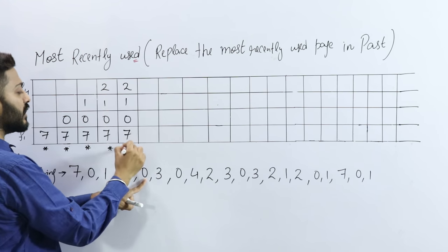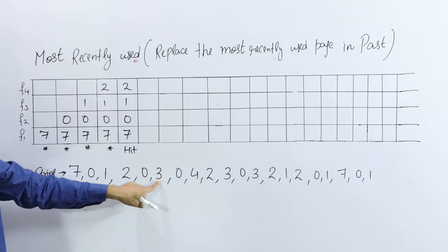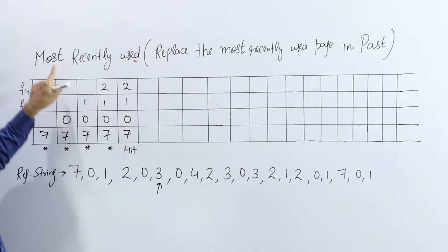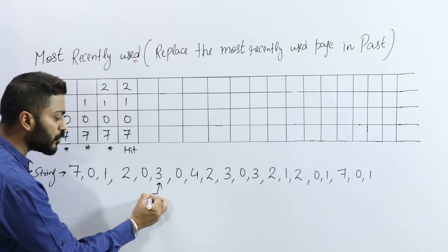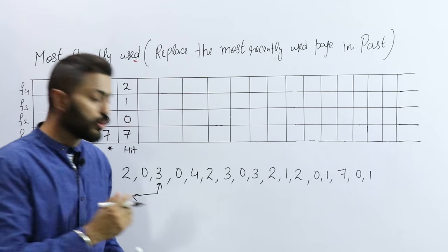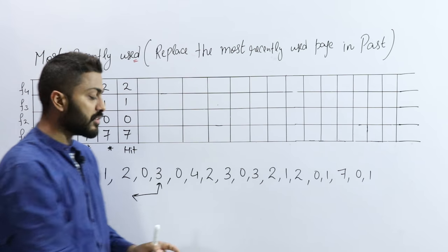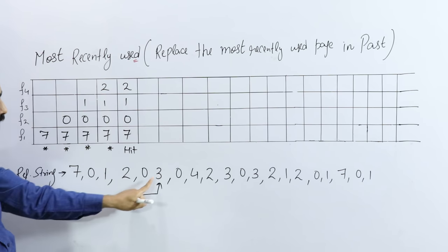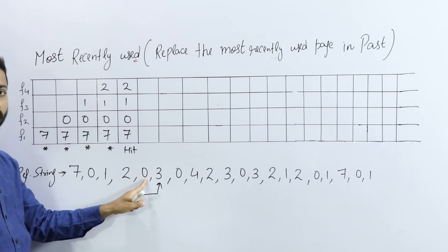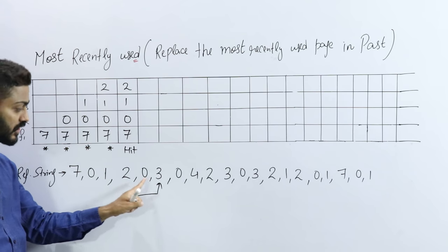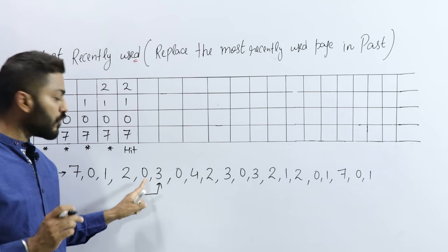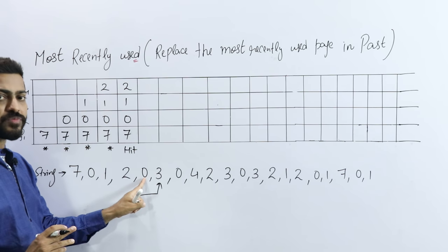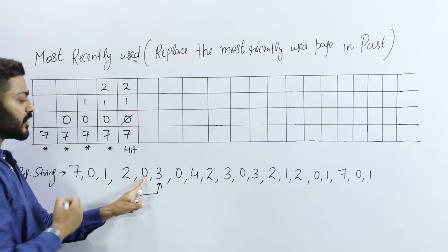Page number 0 — is it present? Yes, it is already present, that is called a hit. Now page number 3 — is page number 3 present? No. So according to the Most Recently Used method, we always remember: LRU and MRU both work on the past, while Optimal works on the future. So we check the past — among 2, 1, 0, 7, which page was most recently used? The page just before 3 — that is 0. So we replace 0 with page number 3.